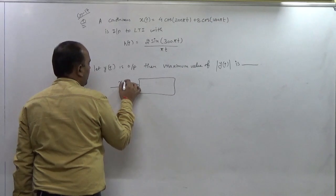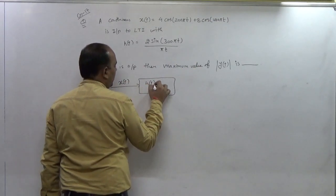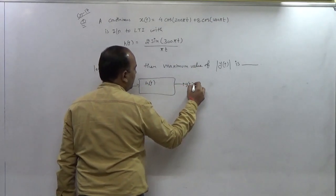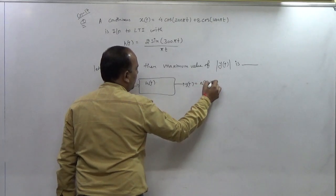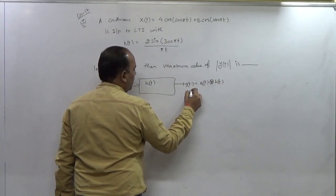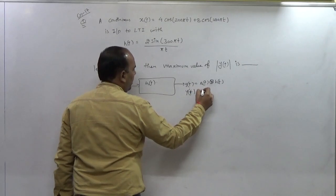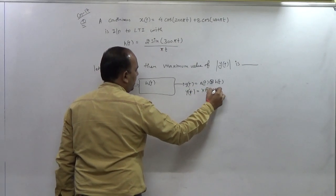Ht and Yt. So as per the definition, output should be the convolution of Xt and Ht, and in the frequency domain Yf is equals to Xf multiplied by Hf.